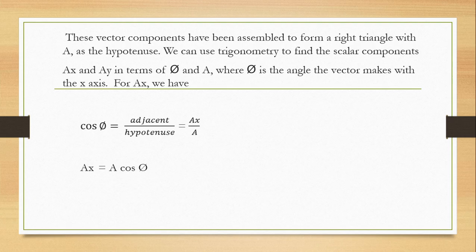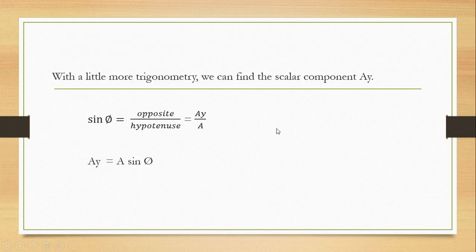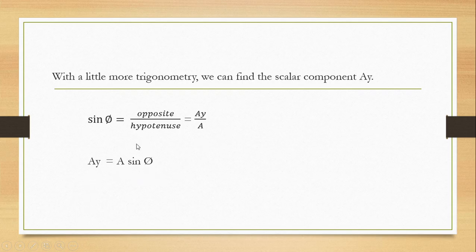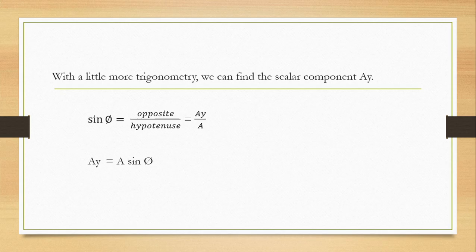Don't worry — I have a lot of considerations, especially now because of this pandemic. Let's endure this together. With a little more trigonometry, you can find the scalar component Ay. Using sine — opposite over hypotenuse — we get sine theta equals Ay over A, where Ay is equal to A sine theta. I will give you a link to my video on YouTube so you can see the figure along with my explanation of the opposite, hypotenuse, and adjacent sides of the triangle. Thank you.